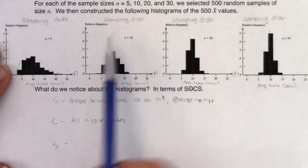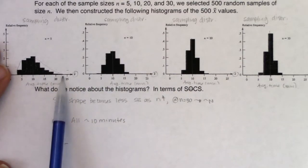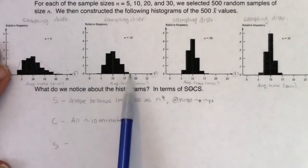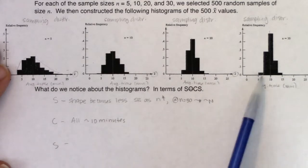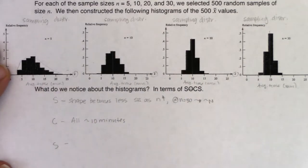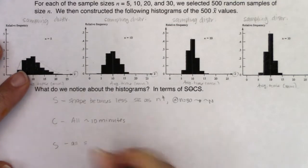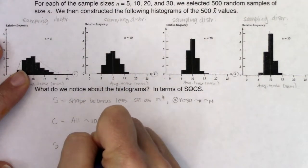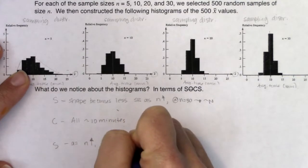Now let's look at the spreads. The initial population spread was from 0 to 40 minutes. In the sampling distributions, it goes from about 5 to 22, then 5 to 16, then 5 to 15. So as sample size increases, the spread got smaller and smaller.